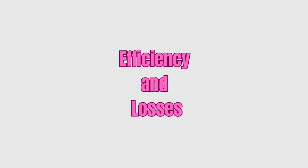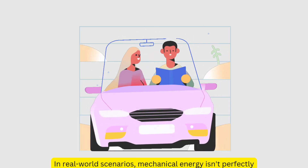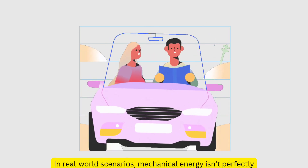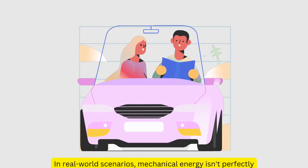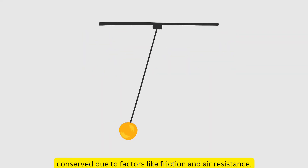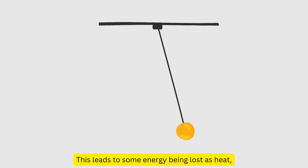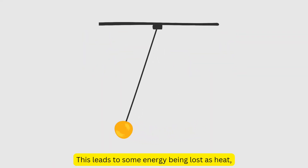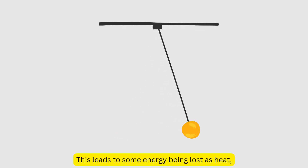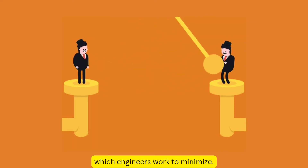Efficiency and losses. In real-world scenarios, mechanical energy isn't perfectly conserved due to factors like friction and air resistance. This leads to some energy being lost as heat, which engineers work to minimize.